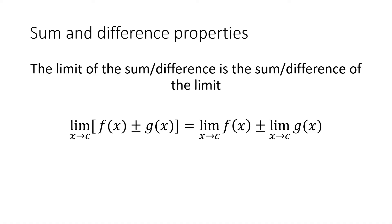So what we want to talk about is the sum and difference properties. Basically, the sum property says the sum of the limits is the limit of the sum, and the difference property says the difference of the limits is the difference of the sum. So if you're adding or subtracting two functions together, you can break them up into two separate functions and find the limits individually.